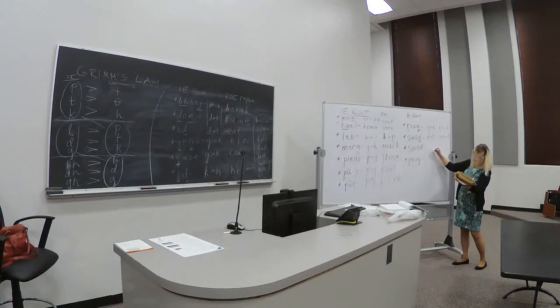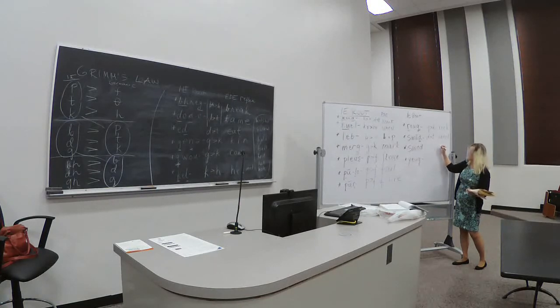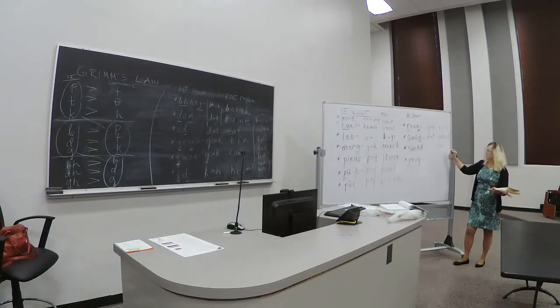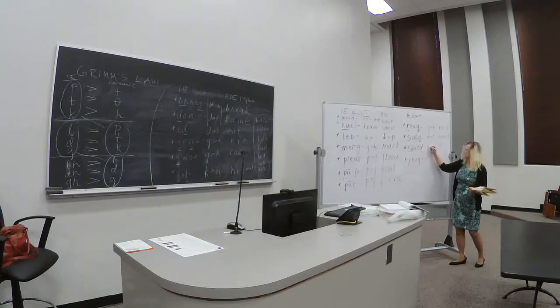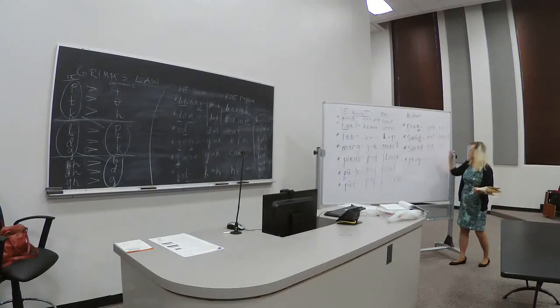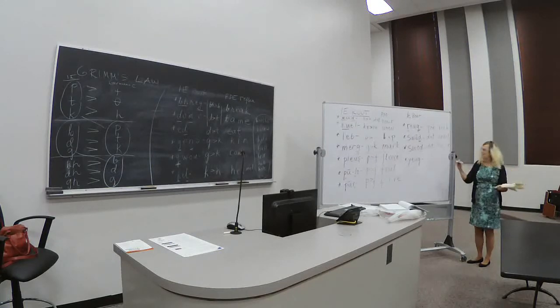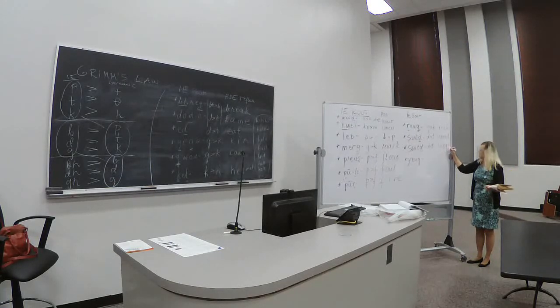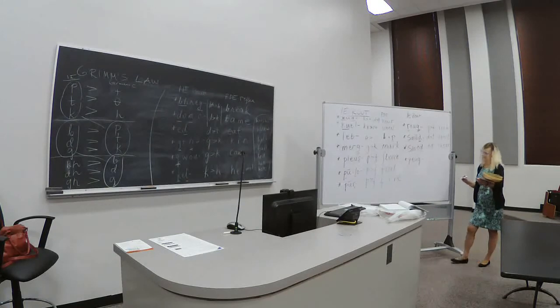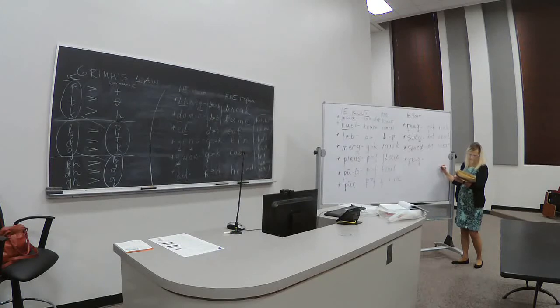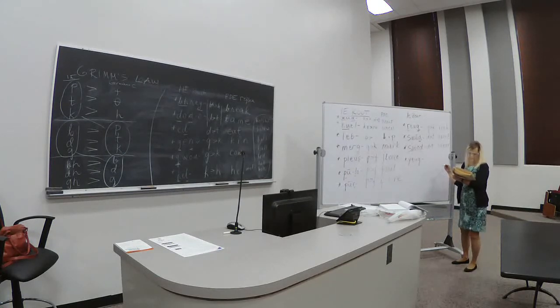The next one is swad. We did that. So swad in Indo-European meant exude. And here we are looking at, not S or W, because Grimm's Law doesn't concern that, but we are looking at what happened to D. It became T. So what is that word? Sweat. Sweat. It's an old word going back all the way to Indo-European.